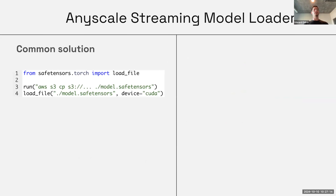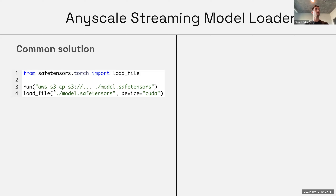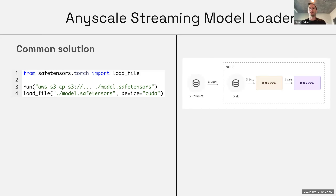The standard baseline solution we see customers use is: first download weights from an S3 bucket using the AWS S3 CP CLI, which is well-tuned for high throughput; then after downloading to local disk, use a library like SafeTensors to efficiently load from local disk onto the GPU. The problem is that you have three synchronous load steps — download from S3 to local disk, load from disk into CPU memory, then load from CPU memory into GPU memory — and when weights get really large, each stage takes quite a while.